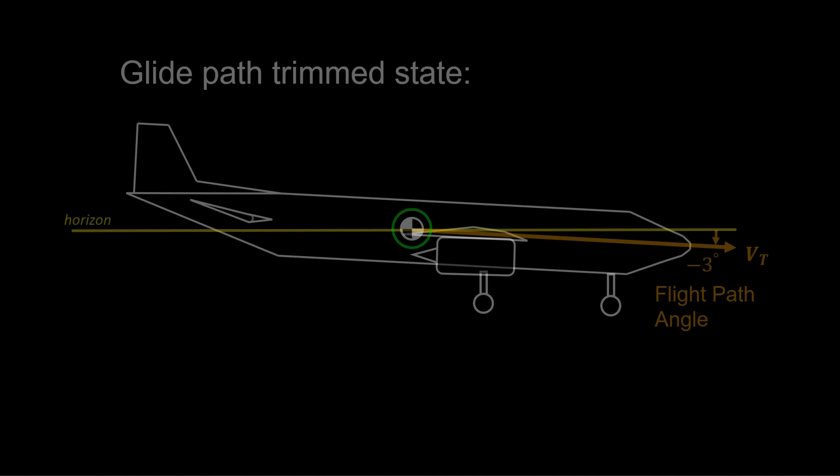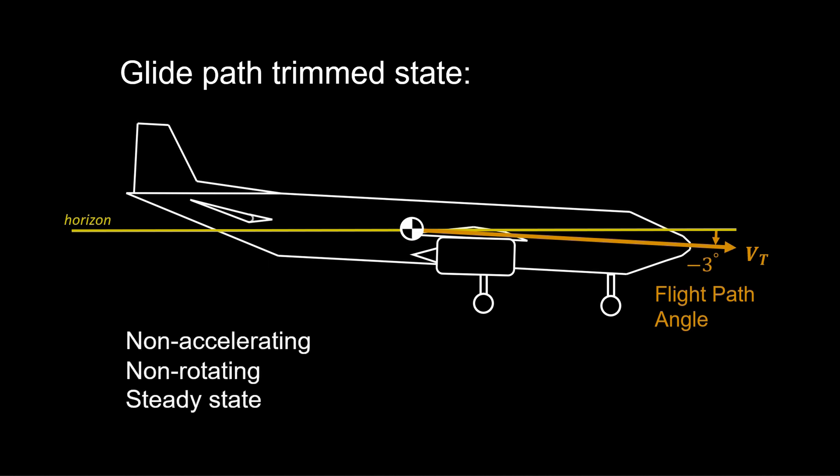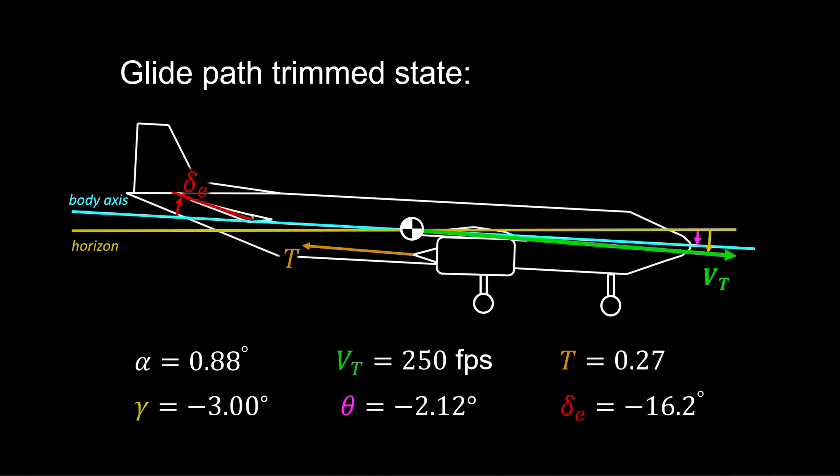So we trim the model here about the glide slope for automatic landing control. And this is non-accelerating, non-rotating, steady flight, where the forces and moments about the center of gravity sum to zero. Applying the trim routine from section 1.7, we're trimming to a minus 3 degree flight path angle at 250 feet per second. And we trim with the elevator pitched up, minus 16.2 degrees, and 27% throttle.